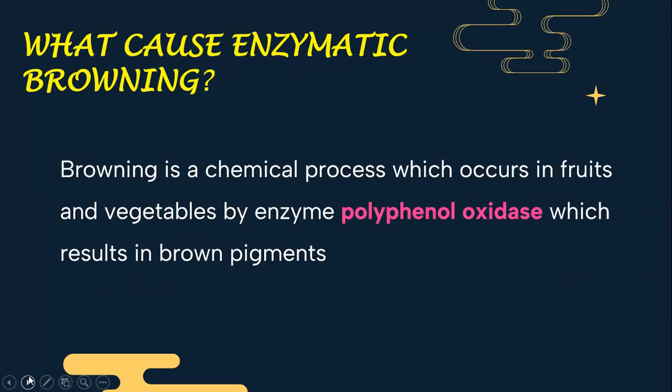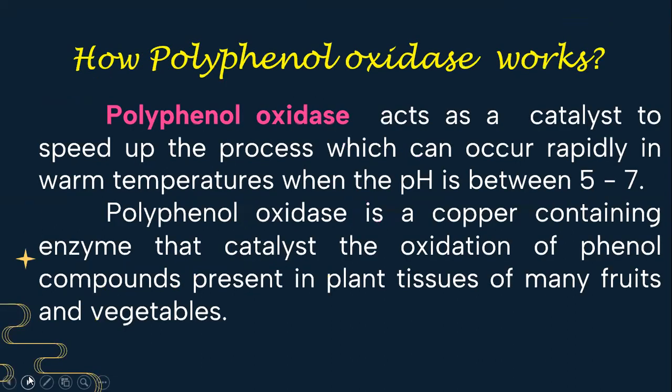What causes enzymatic browning? Browning is a chemical process which occurs in fruits and vegetables by the enzyme called polyphenol oxidase, or polyphenolase, which results in brown pigments. Polyphenol oxidase acts as a catalyst to speed up the process, which can occur rapidly in warm temperatures when the pH is between 5 to 7. It is a copper-containing enzyme that catalyzes the oxidation of phenol compounds present in plant tissues of many fruits and vegetables.